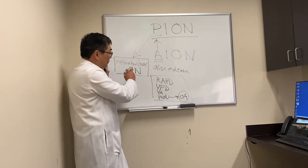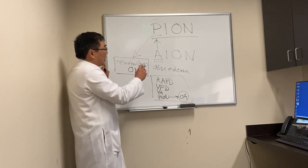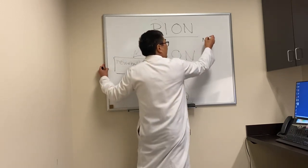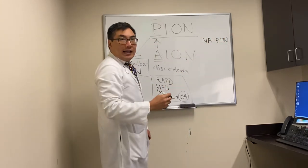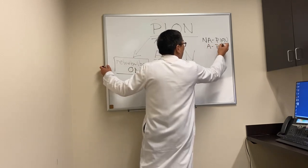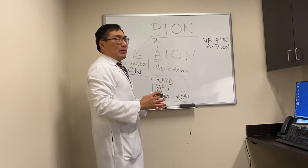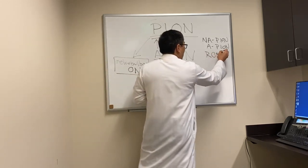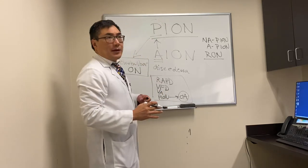In some respects it's a retrospective diagnosis because we have to see the optic atrophy develop after resolution of the retrobulbar optic neuropathy. There are different types — just like non-arteritic anterior ischemic optic neuropathy, there's non-arteritic PION, and then there's arteritic PION, and then things that look like PION but are really retrobulbar optic neuritis or compressive optic neuropathy.